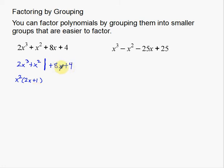Over here, I don't have any variables in common, but I do have numbers in common. The 8 and the 4 are both divisible by positive 4, so positive 4 is what I'm going to factor out. What I have left is 2x plus 1. That's one step of factoring and I'm going to do a couple more steps.